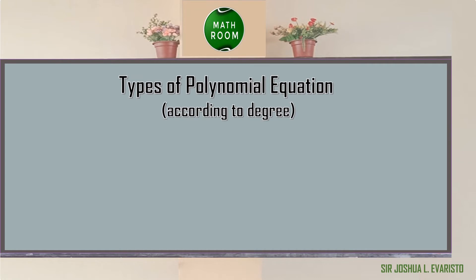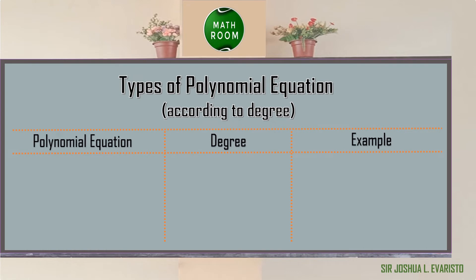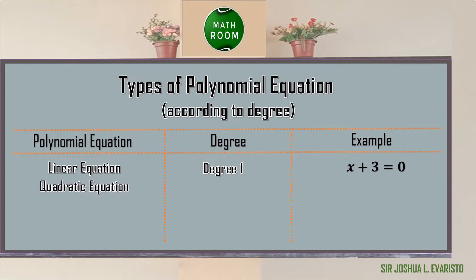Polynomial equations can also be classified according to degree. A linear equation has degree 1, for example x plus 3 equals 0. A quadratic equation has degree 2, for example x squared minus 4x plus 5 equals 0, where the highest exponent is 2.